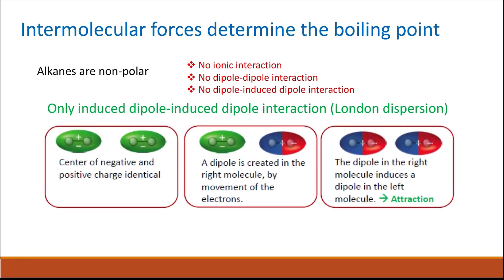So the only type of interaction is induced-dipole–induced-dipole interaction, which we call London dispersion interaction or van der Waals interaction. As molecules approach each other, one bond induces a dipole in the neighboring one, which in turn induces the opposite dipole in its neighbor, creating an interaction between induced dipoles. This kind of interaction is quite weak, which is why alkanes have quite low boiling points.